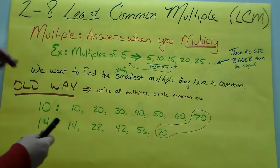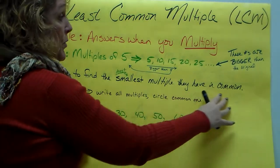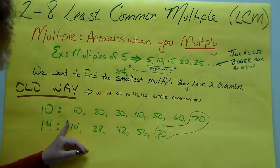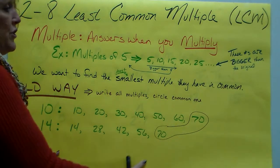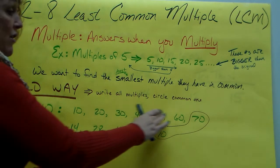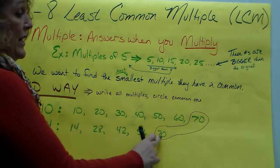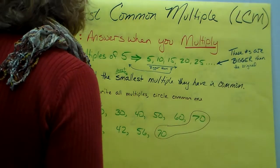So, when we're looking for the least common multiple, we want to find the smallest multiple that they have in common. Now, the old way that you used to do this was that you wrote down all the multiples and you circled the common one. And so here's what it looked like for 10 and 14. You'd write down all the multiples for 10 and all the multiples for 14 until you found the one that they have in common. And you circled that.